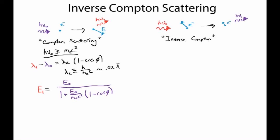In the inverse Compton case, we could repeat the derivation we did for Compton scattering if only our electron weren't moving. But unfortunately our electron is moving, possibly at relativistic speeds. So in order to get into a frame of reference where we can repeat our Compton scattering derivation, we need to move into the reference frame of the electron. I'm going to write in blue to indicate that we're in the reference frame of the electron.